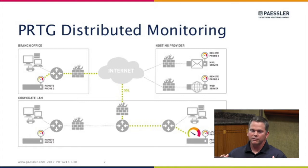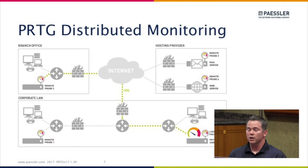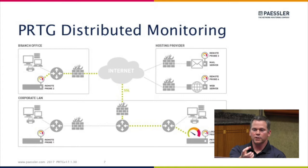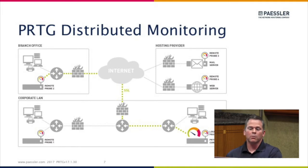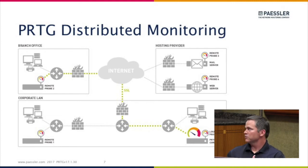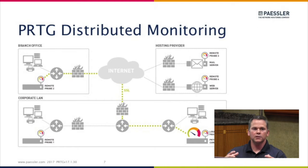But if you have a distributed network with different network segments, different locations, data centers, or branch offices, you can deploy what's called a remote probe. It's really just a polling engine that goes into that location. Some of our customers are monitoring other customers or clients, and that's one example of many in which they want an easily distributed monitoring footprint.